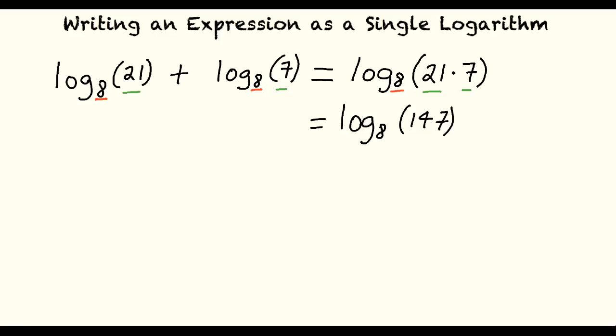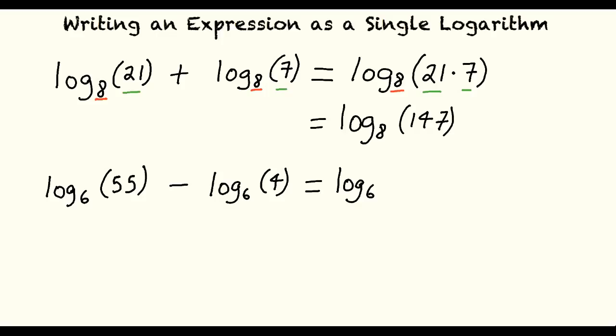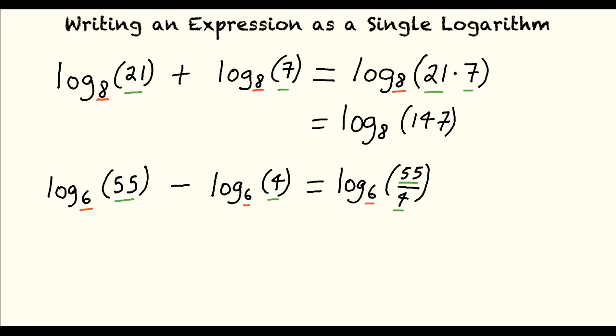Now let's walk through an example of the logarithm of a quotient property. To rewrite log base 6 of 55 minus log base 6 of 4, begin by writing the simplified expression with the same base as the two original terms. Next, write the argument of the first term divided by the argument of the second term, resulting in a final answer of log base 6 of 55 over 4.